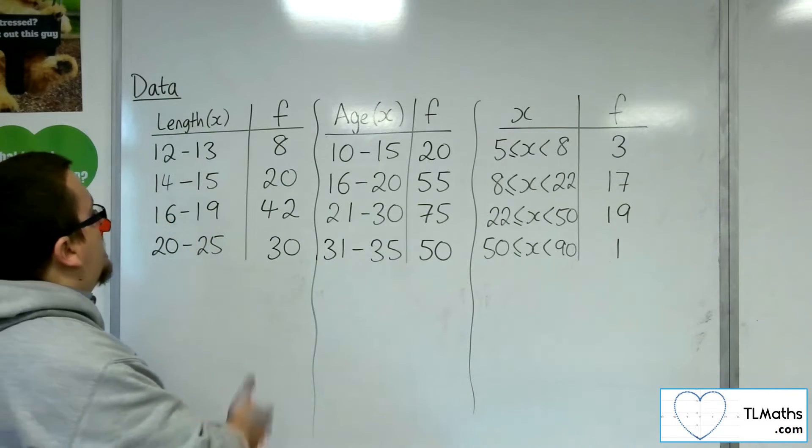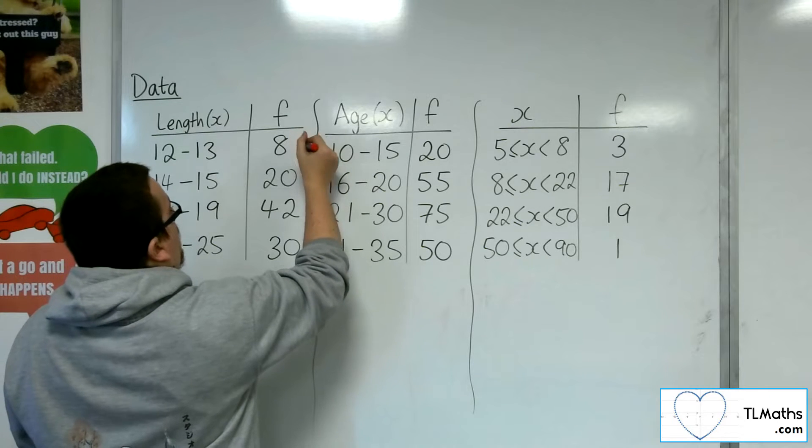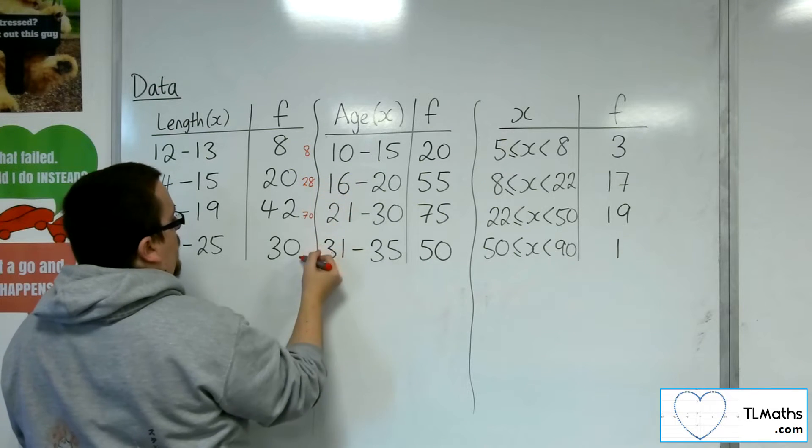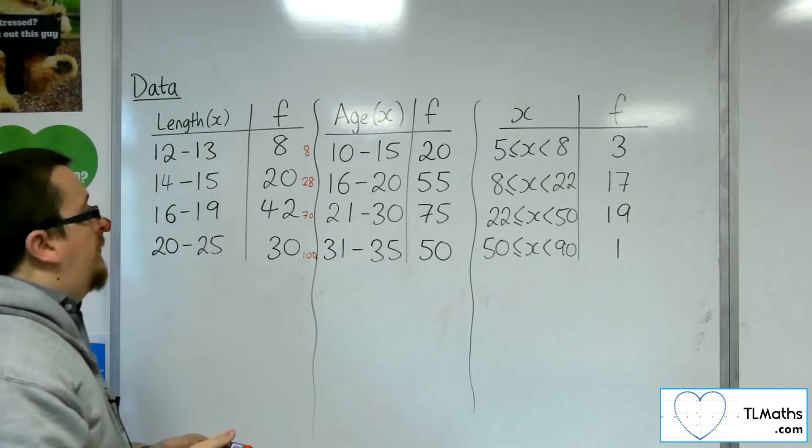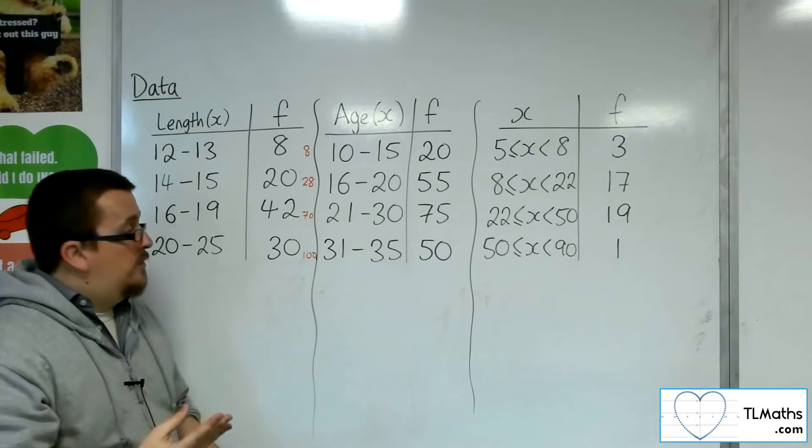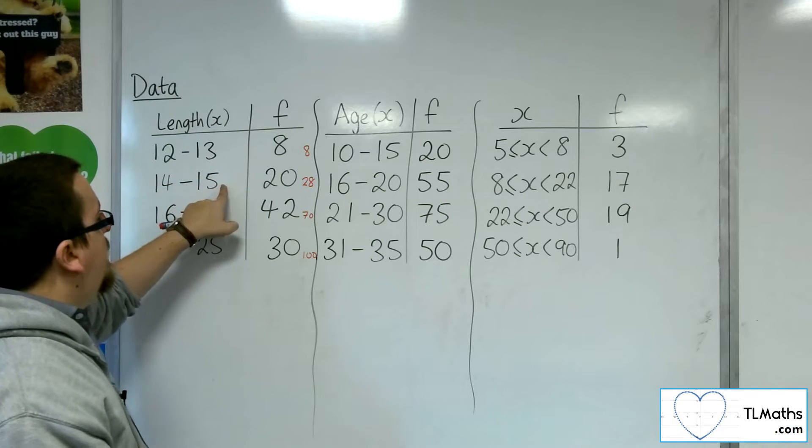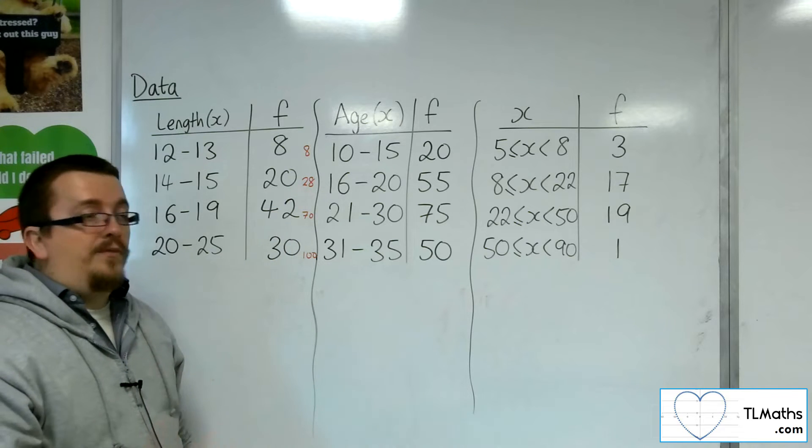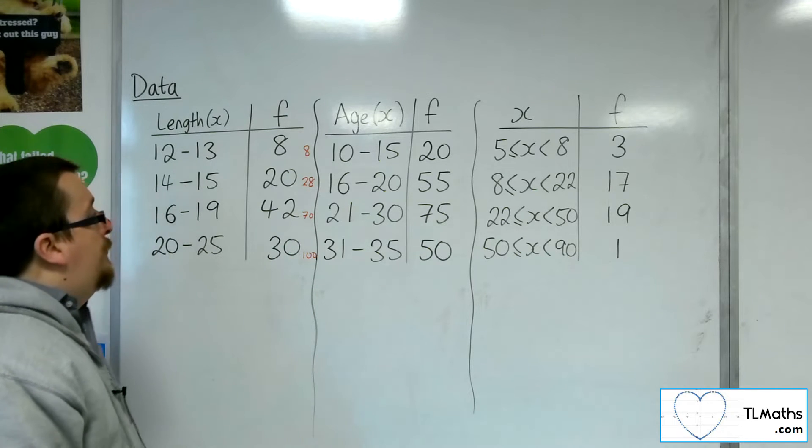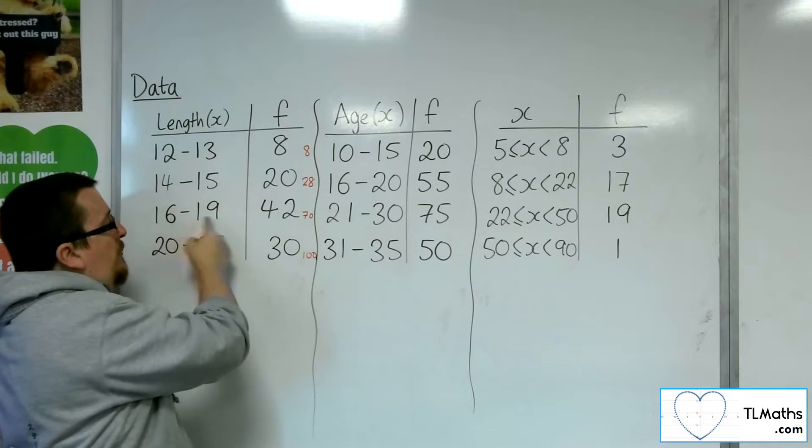So let's have a look at this first one first. Really, I need to have that cumulative frequency by the side. So if I start off with 8, then I would have 28, and then adding on 42, that would get me up to 70, and add on 30, I'd get to 100. So the median value will be at the 100 divided by 2, 50th position. Now, by the time I've got to the end of this group at 15, or 15.5 rather, I've got through 28 bits of data. And then by the time I get to 19.5, I've gone through 70 bits of data.